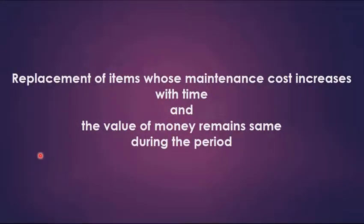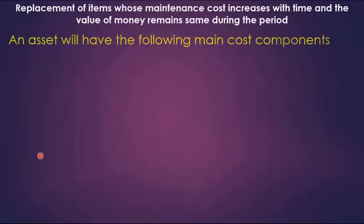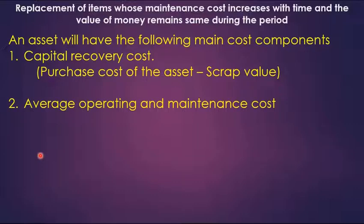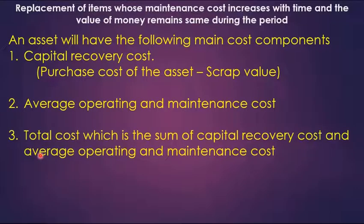Now let's take the first example — replacement of items whose maintenance cost increases with time and the value of money remains the same during the period. Before discussing the example, let's consider the main cost components associated with a replacement problem. First is capital recovery cost: purchase cost of the asset minus scrap or salvage value. Second is average operating and maintenance cost: the sum of operating cost and maintenance cost. Third is total cost: the sum of capital recovery cost and average operating and maintenance cost. Fourth is average total cost for the given year: total cost divided by number of years of usage.